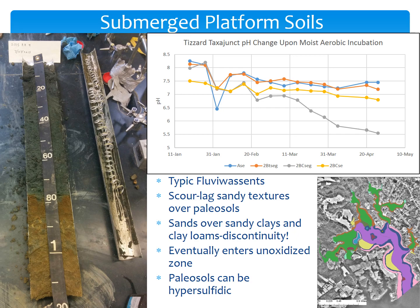Moving into the main part of the Rhode River, we have submerged wavecut platform soils, which are what we find along that shelf we saw in the contour data. We find typic fluviwassents or eric fluviwassents here, though those names don't really describe what we see, because we have these thick scour lag deposits — sometimes rather thin, actually — that tend to be sandy, over paleosols, which can be sands or sandy clays. In many cases there's an abrupt boundary at the discontinuity, and continuing deeper you get into an unoxidized zone of black materials that resemble marine sediment parent materials. The reason we think that reddish-brown material in the lower part of this horizon is a former upland paleosol is because of these colors — iron oxides that have formed, and in particular this pale yellow mineral, jarosite, that only forms at very low pH in an oxidizing environment. So it's likely to have formed during a period of exposure.